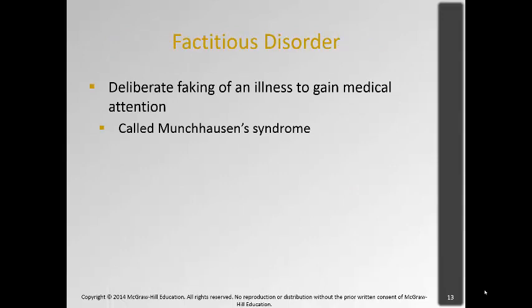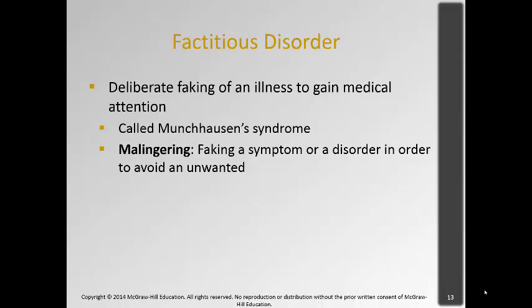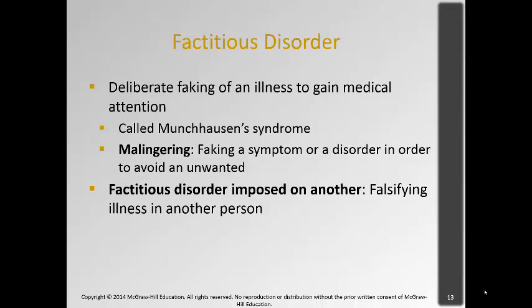Factitious disorder — you've probably heard of Munchausen syndrome or Munchausen syndrome by proxy. It's the deliberate faking of an illness to gain medical attention. Some people will induce symptoms in themselves by actually poisoning themselves or infecting their wounds. People do this generally in order to get attention. Factitious disorder imposed on another, or Munchausen's by proxy, is falsifying the illness of another person. This often happens with mothers and their children — the mother seeks to get attention by making the child sick and bringing them to the hospital. This can get so severe that the mother actually ends up killing the child, and sometimes they're caught on videotape administering things to the child.